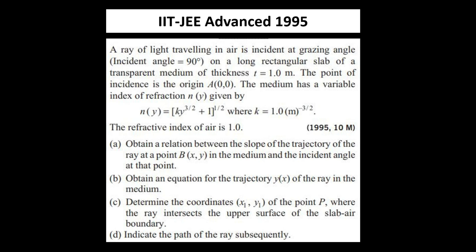A ray of light travelling in air is incident at a grazing angle — angle of incidence 90 degrees — on a long rectangular slab of a transparent medium of thickness 1 meter. The point of incidence is the origin. The medium has a variable refractive index given by (ky^(3/2) + 1)^(1/2), where k is 1 unit. Refractive index of air is 1. We have to find: the relationship between the slope of the trajectory of the ray at point B and the incident angle at that point; obtain the equation for the trajectory y(x) of the ray in the medium; determine the coordinates (x, y) of point B where the ray intersects the upper surface of the slab-air boundary, and indicate the path of the ray subsequently.